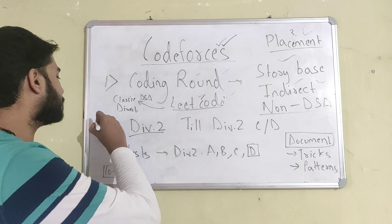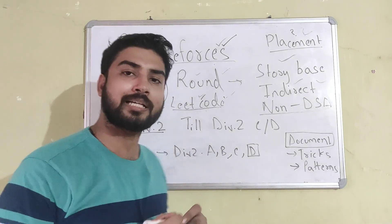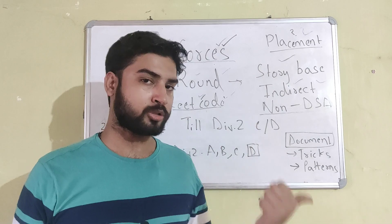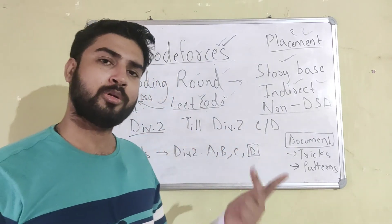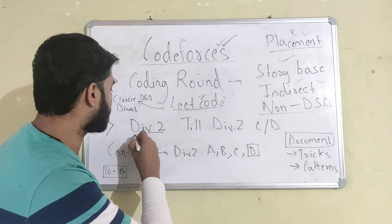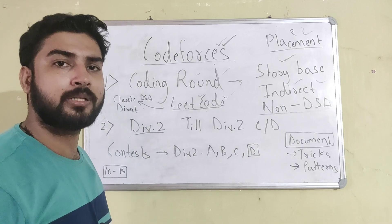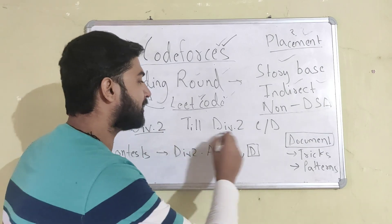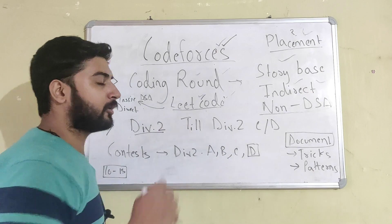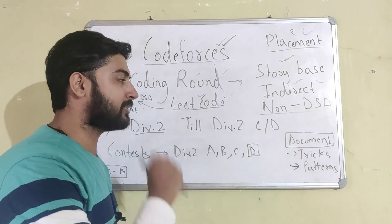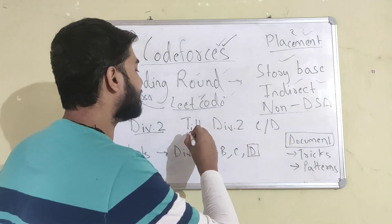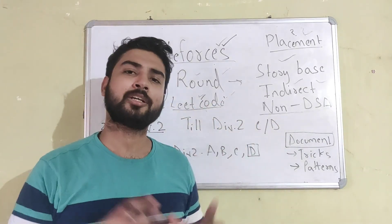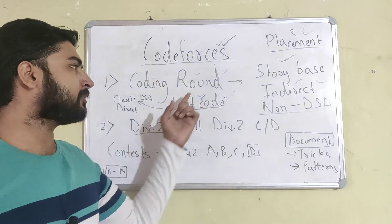CodeForces has divisions: Division 1 is the most difficult, then Division 2, Division 3, and Division 4. Division 2 is where you'll be focusing, and that's where the majority of people lie. The problems that come in coding rounds have difficulty only up to Div2C or Div2D. In a Div2 contest, you have problems A, B, C, D, E, F — A is the easiest and F is the most difficult. If you're able to solve problems up to Div2D, I can assure you that you'll be able to crack the coding round of pretty much every company.